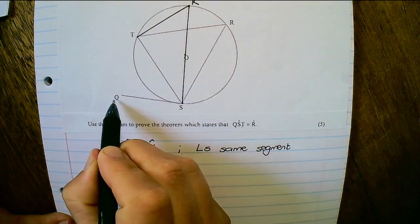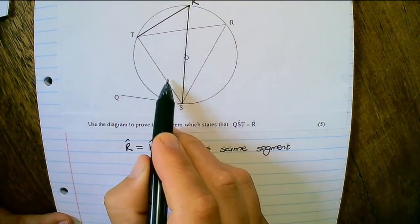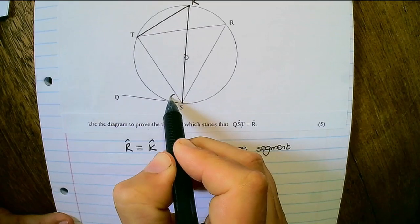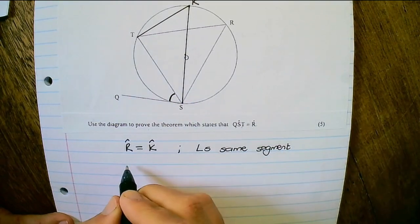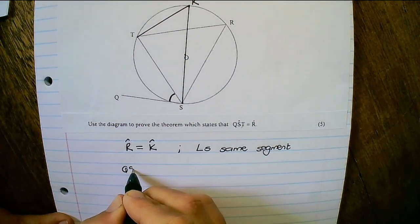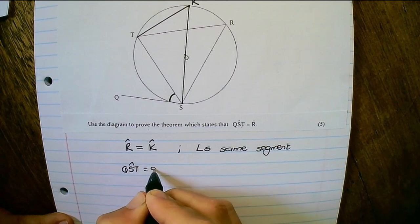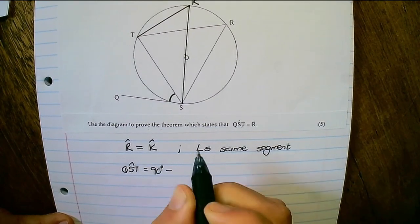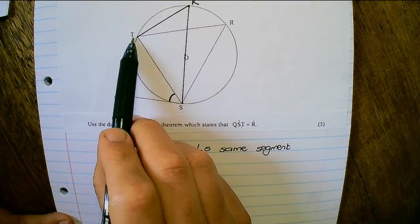Therefore, the angle QST, the angle between the tangent and the chord would be equal to 90 degrees minus the angle TSK.